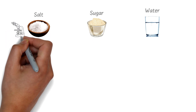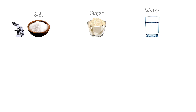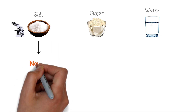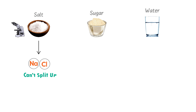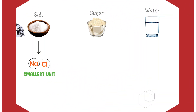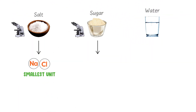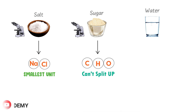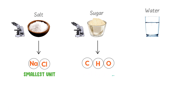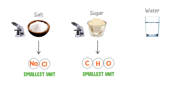Now consider salt, sugar, and water. If we observe salt under an electronic microscope, we see that salt is formed from two things: sodium and chlorine. We cannot split up sodium or chlorine further, so they are the two smallest units of salt. If we observe sugar, we get carbon, hydrogen, and oxygen — these cannot be split up further, so they are the three smallest units of sugar.